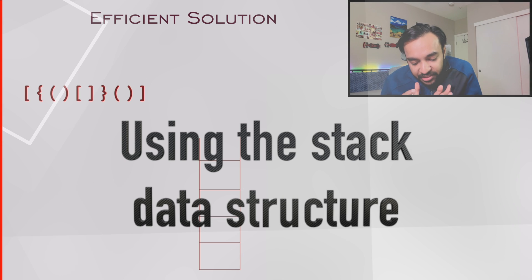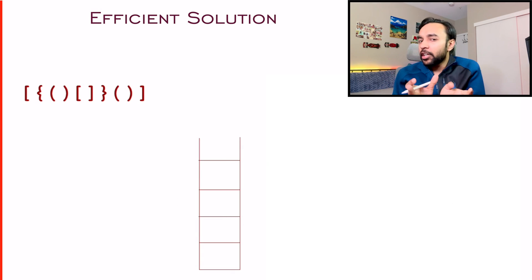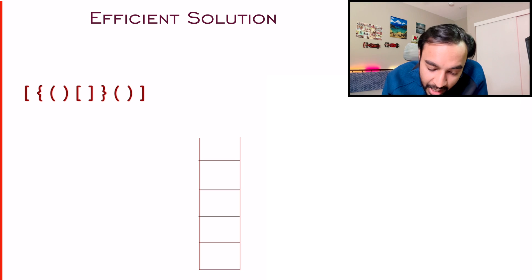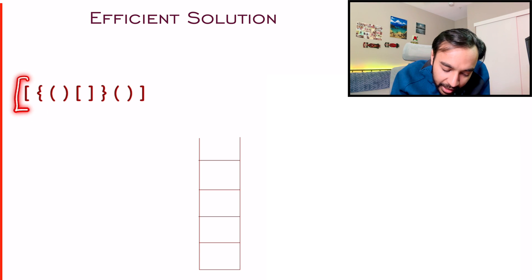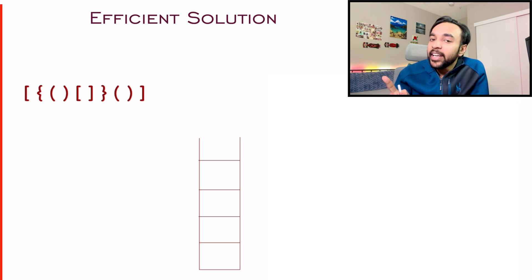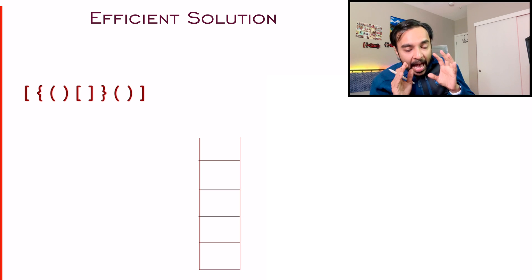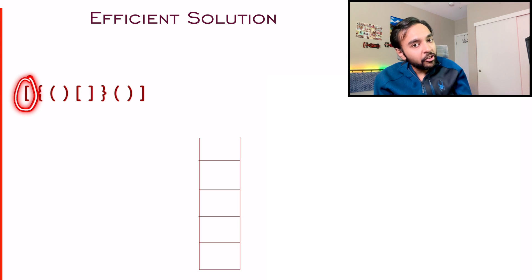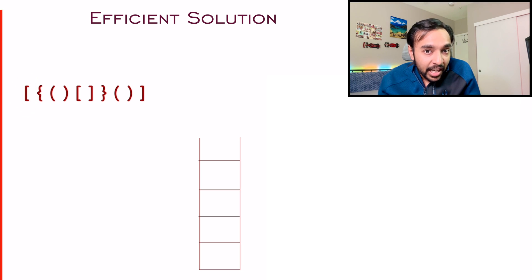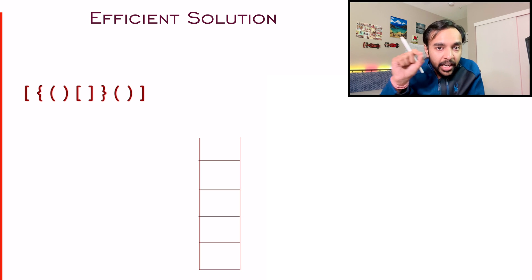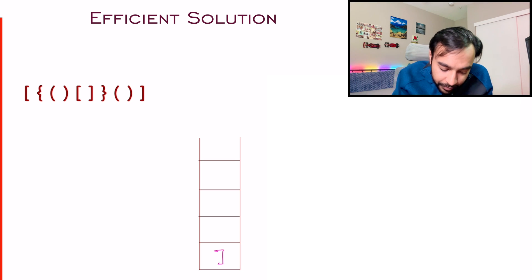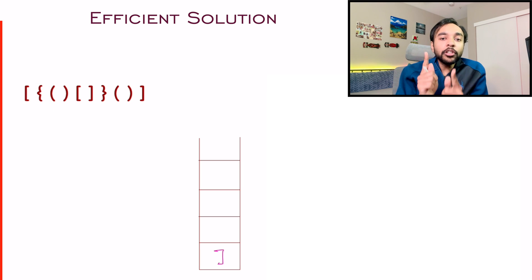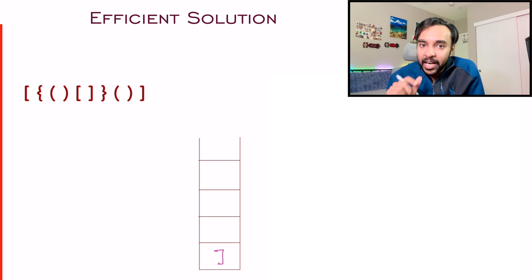Now I have a stack data structure and the same string. You have to determine if this string has valid parentheses or not. Start traversing the string from the beginning. The first character is an opening square bracket, and for the string to be valid, you will want a closing square bracket as well. So as soon as you get an opening square bracket, add a closing square bracket to your stack and move ahead. Now you get an opening curly bracket, so add a closing curly bracket to the stack.